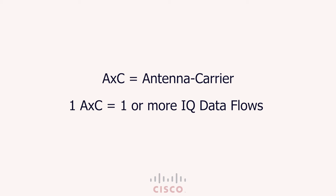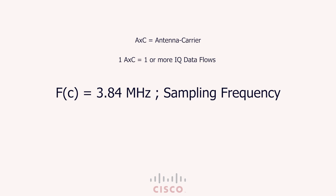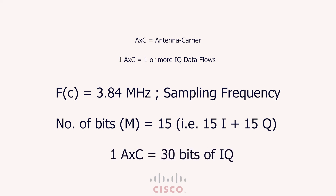The amount of information present in an AXC depends on two things: first, the sampling frequency FC equals 3.84 megahertz as noted earlier; and second, the number of bits M used in the quantization process of the I and Q radio signals. In most CPRI FPGA implementations we use M equals 15 bits for maximum capacity efficiency, which means 1 AXC equals 15 bits for I and 15 bits for Q, so IQ becomes 30 bits.